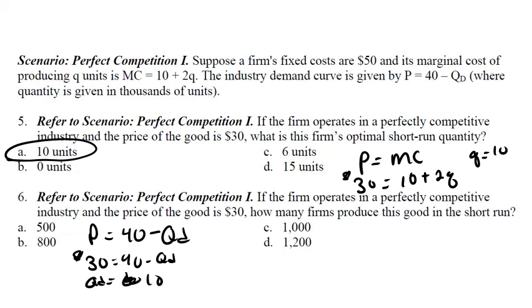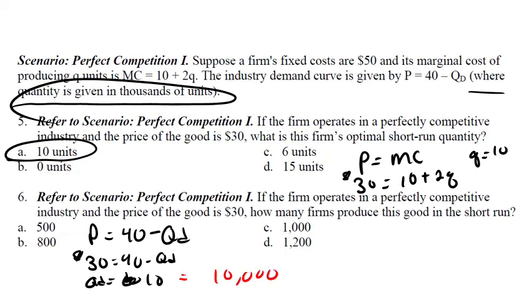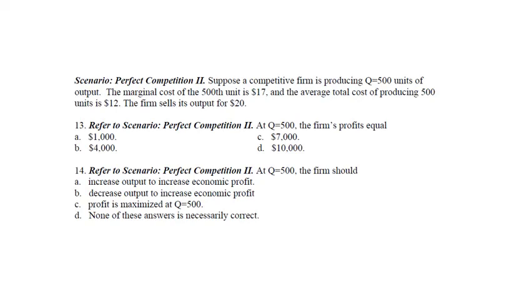But please notice something here. We wrote that where the quantity is given in thousands of units. So now we know this is equal to 10,000 units being produced. We know that each firm in this industry is producing 10 units. So that's going to give us 1,000 firms in this industry. And that answer is C. So let's go to the next slide.